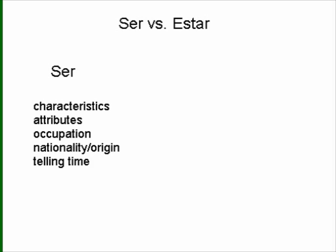Your occupation, of course — my father is an accountant. Your nationality or origin: he is Cuban, she is from Arkansas, that type of thing. And telling time — in English we would say it is 2:45 or whatever. So those are examples of things that we would use the verb ser for.